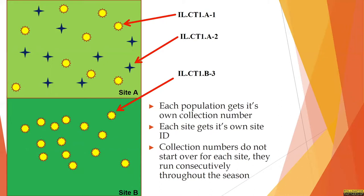Here's another graphic to help display this. In this case, Illinois Collection Team 1 has done three collections from two different sites, with two different species at site A. Illinois Collection Team 1 went to their first site of the season - site A - and did their first collection, collection 1. They then later went back to that same site and collected from a different species, so the collection site is the same but the collection number has sequentially gone up. They then discovered another population of their yellow flower at a new site, which became site B, and it's their third collection of the season. So it's Illinois Collection Team 1, Site B, Collection 3.